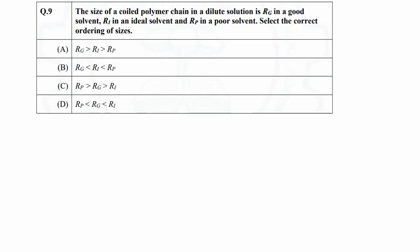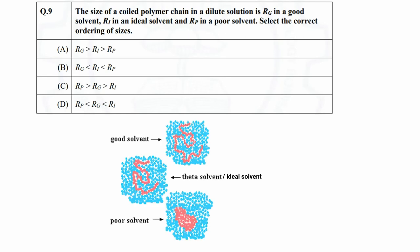Question 9. In this question, we need to identify the sequence of the size of a coiled polymer chain when they are in ideal solvent, good solvent, or poor solvent. As we know, when a polymer chain is added into a solvent, it does not remain in an elongated form. Rather, it forms a coiled structure. Now, the diameter or size of the coil depends on the interaction between polymer chain and solvent molecules. In case of ideal solvent, there is no positive or negative interaction, so we can consider it as a baseline size.